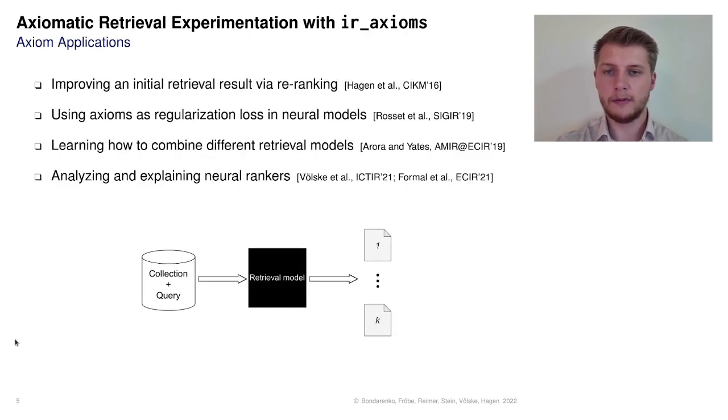Because retrieval axioms can give explainable insights on retrieval models, in the past, axioms have been applied to improve initial retrieval results by axiomatic re-ranking, to regularize error loss functions in neural models, or for combining ranking scores from different models. Neural rankers are often treated like black box retrieval models, like shown on the lower half of the slide.